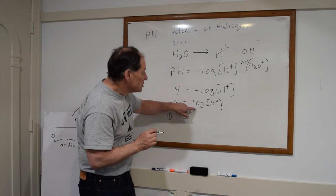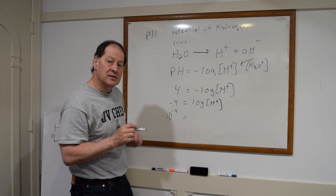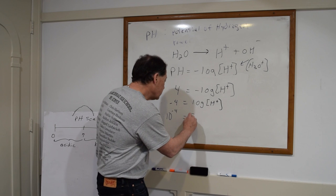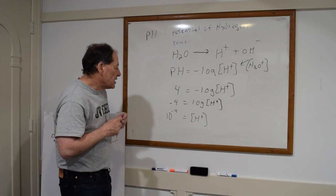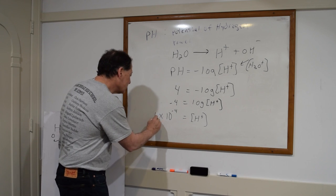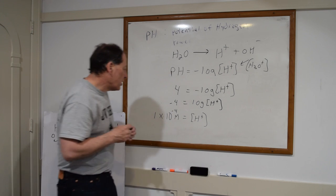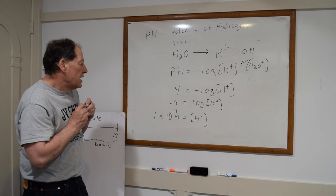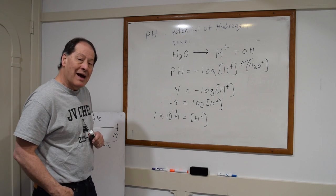So I'm going to do 10 to the x of both sides. So that'll be 10 to the minus 4. And then 10 to the log of H+, the 10 to the x and the log cancel each other out. And that gives you just that H+ concentration. So there I have the H+ concentration is 10 to the negative 4 or 1 times 10 to the negative 4 molar. So if the pH is 4, then I know that the H+ concentration is 1 times 10 to the minus 4.